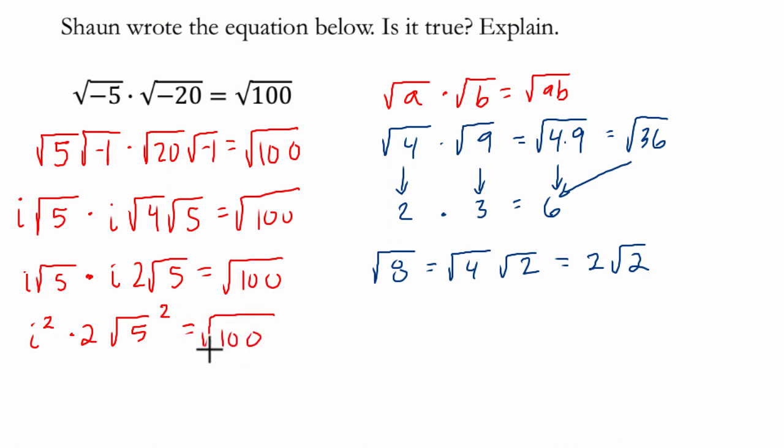Okay, so let's just keep going with what we know about this. So i squared is negative 1, then we're multiplying by 2, and then by the square root of 5 squared, which is 5.